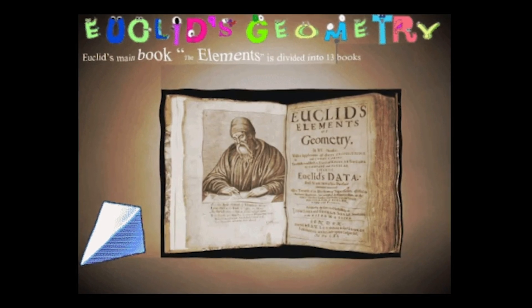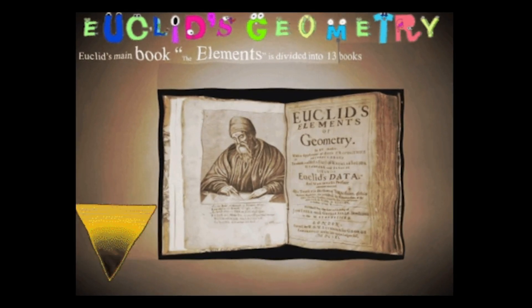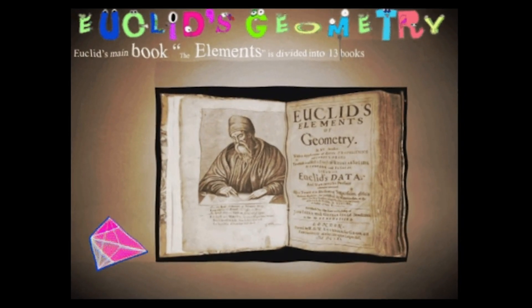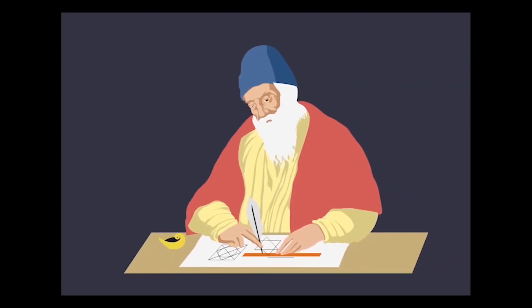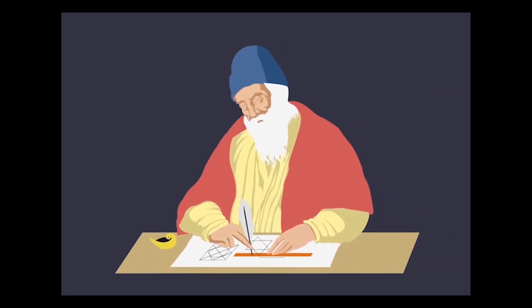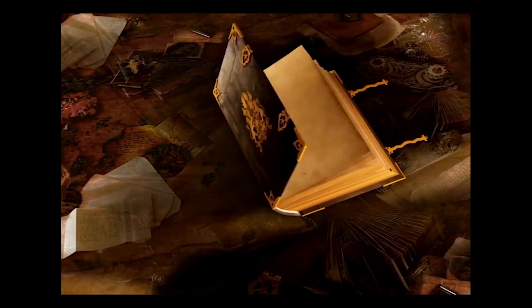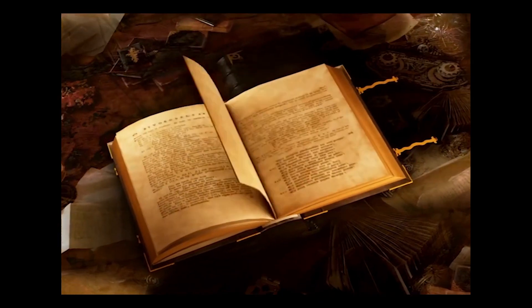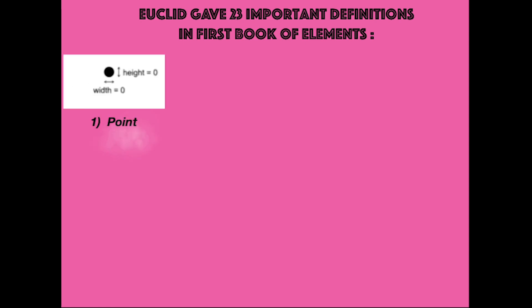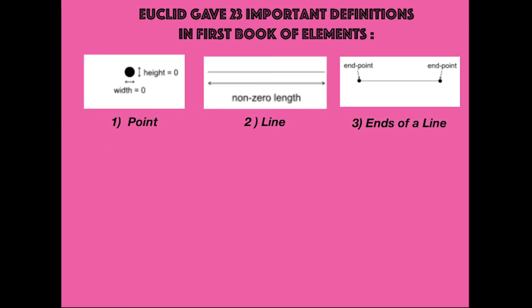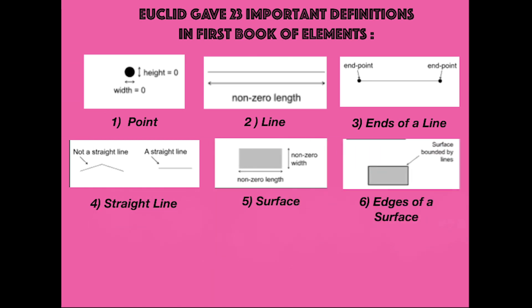Euclid was the earliest known mathematician to organize geometry. He was so great that even today Euclidean geometry is in our syllabus. Euclid gave 23 important definitions in the first book of Elements. Some of his definitions are: point, line, ends of line, straight line, surface, edges of surface.